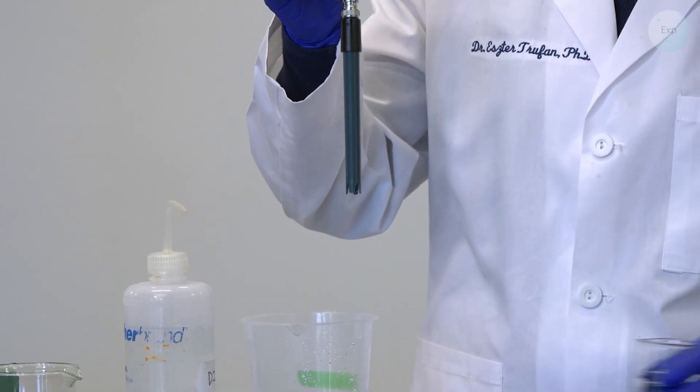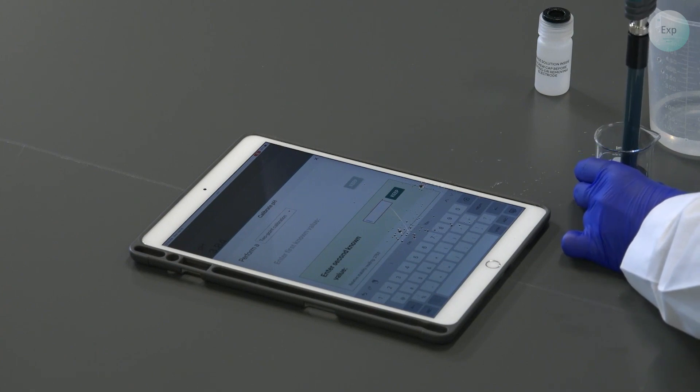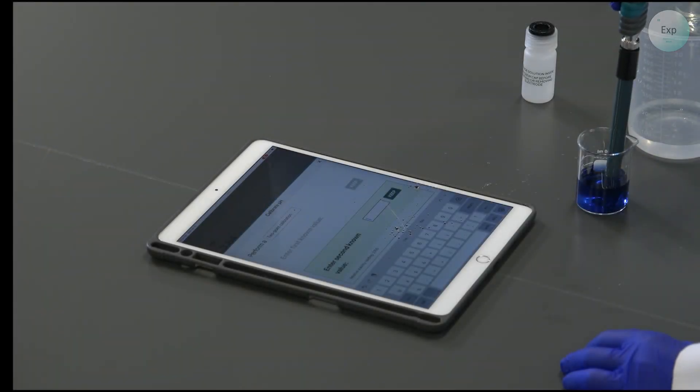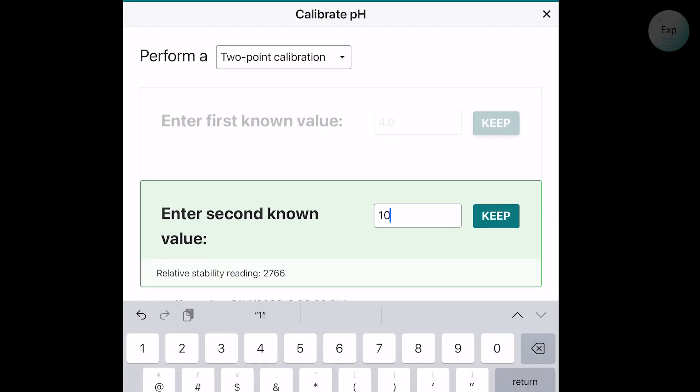And then we transfer it into our blue solution and keep it there for approximately one minute. Once the minute elapsed, we're going to type in 10.0. Press keep.